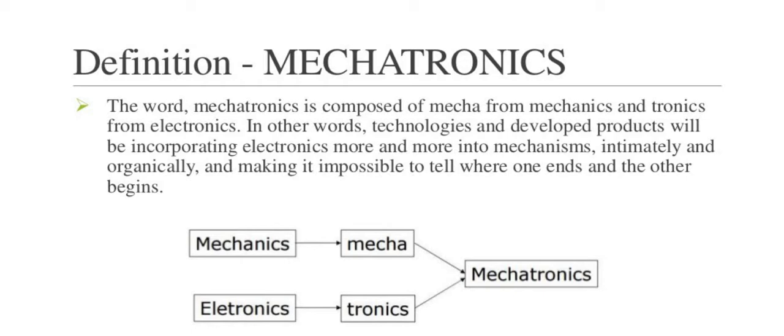Mechatronics Subject. The definition of mechatronics. Before that, we should know about automations. Automation or automatic control is the use of various control systems for operating equipment such as machinery, processes in factories, boilers, heat treating ovens, switching in telephone networks, steering and stabilization of ships, aircraft, and other applications with minimum or reduced human intervention.